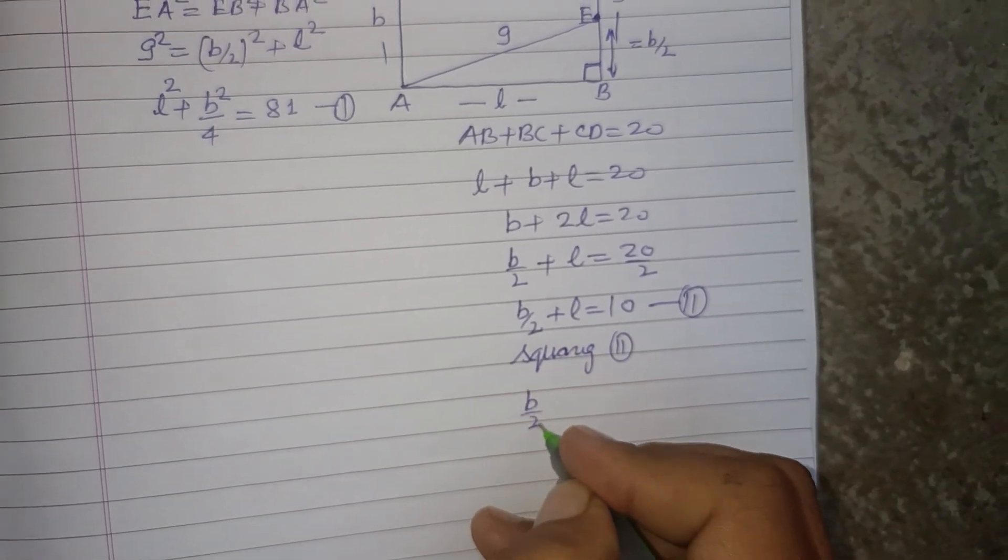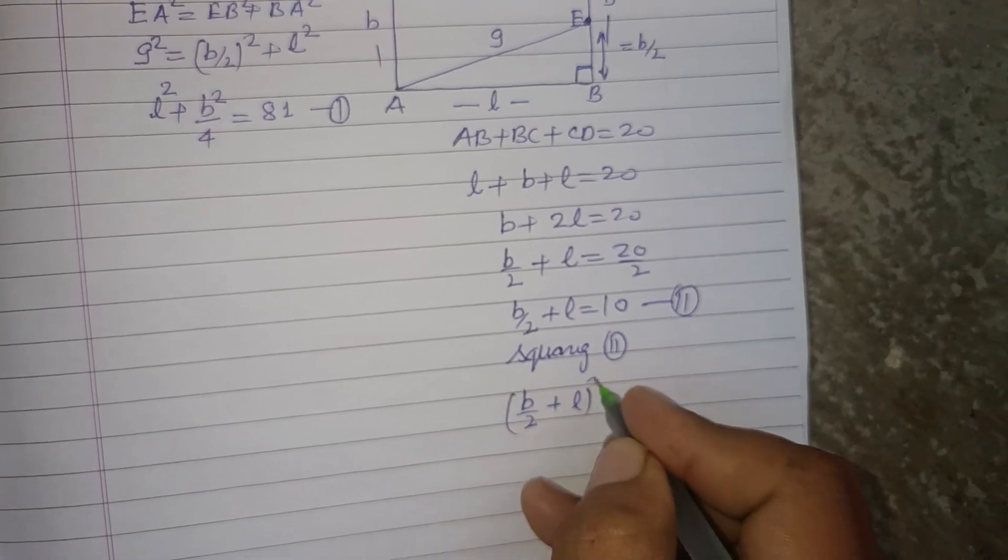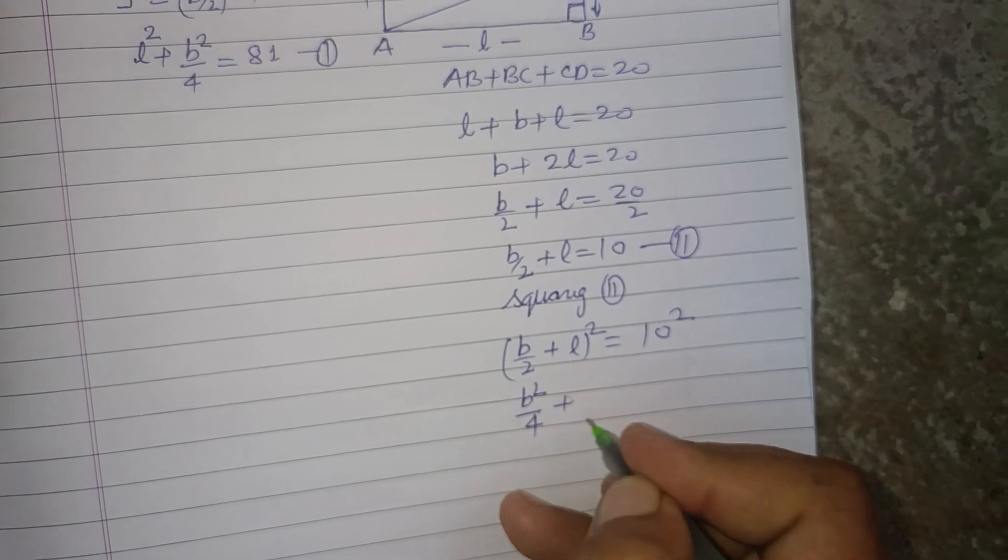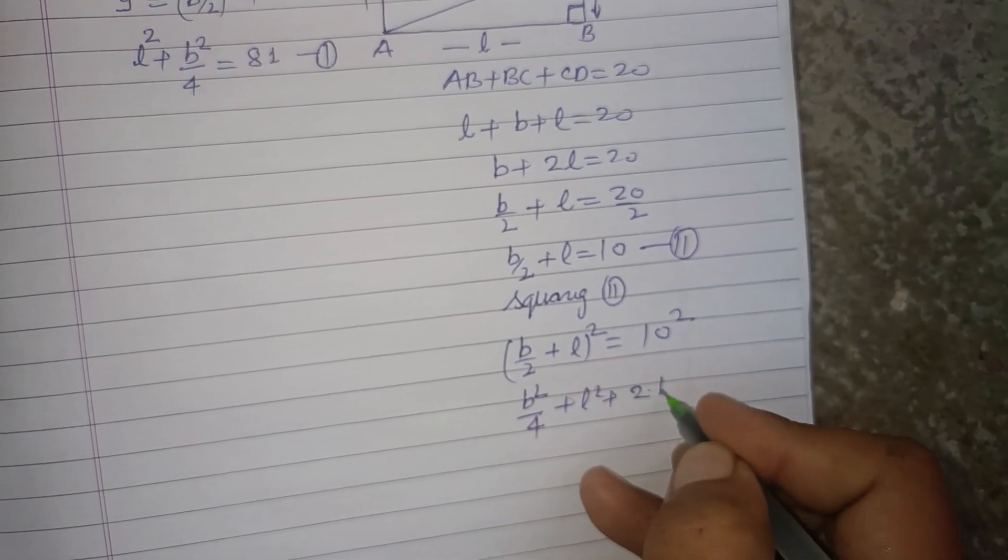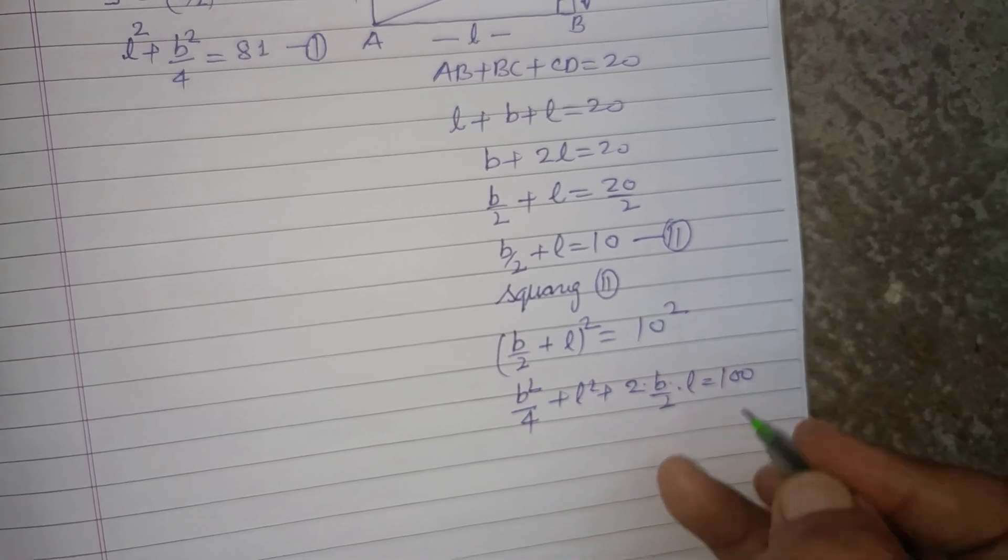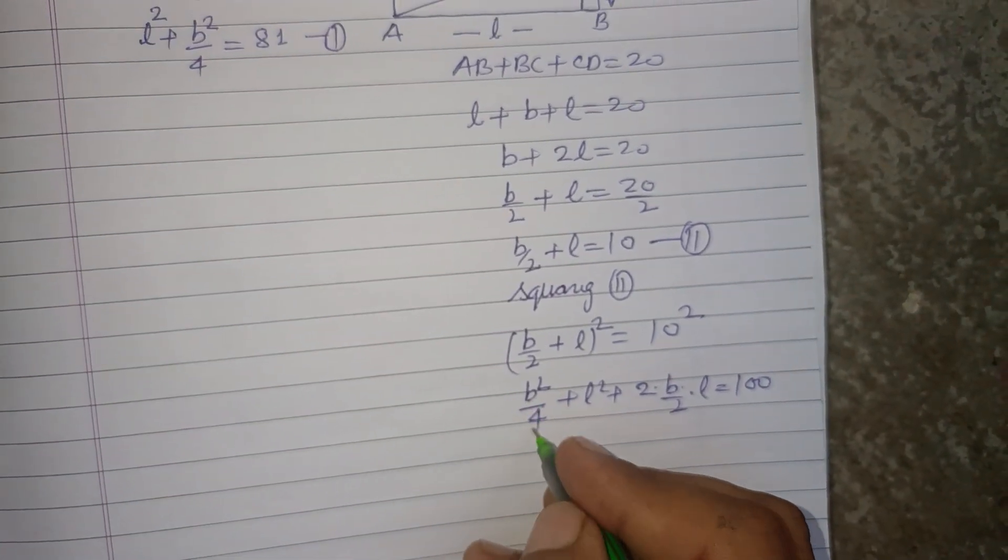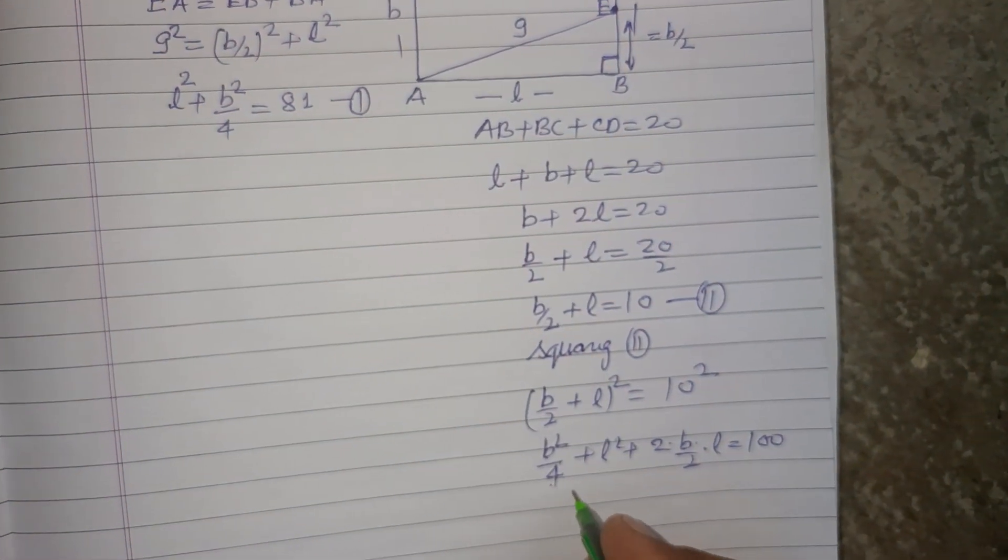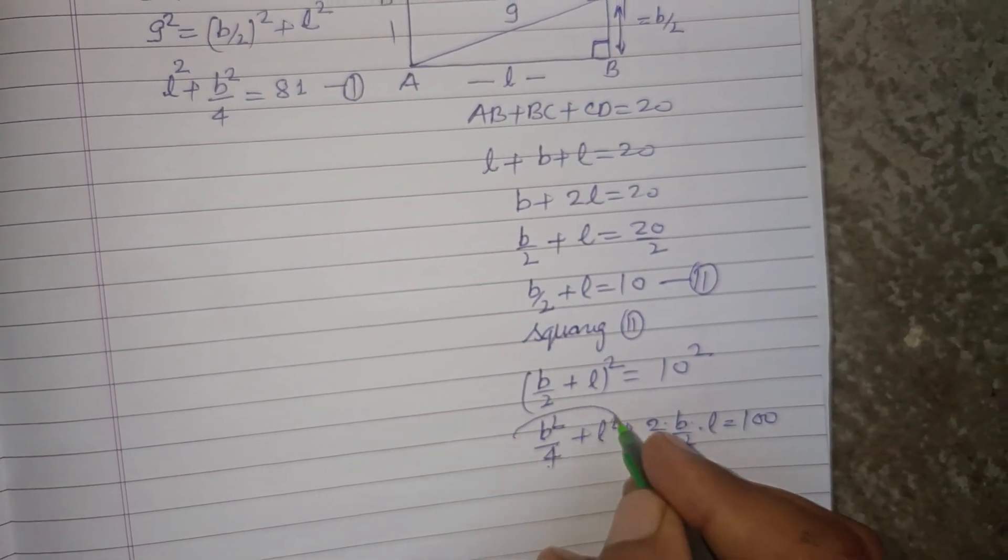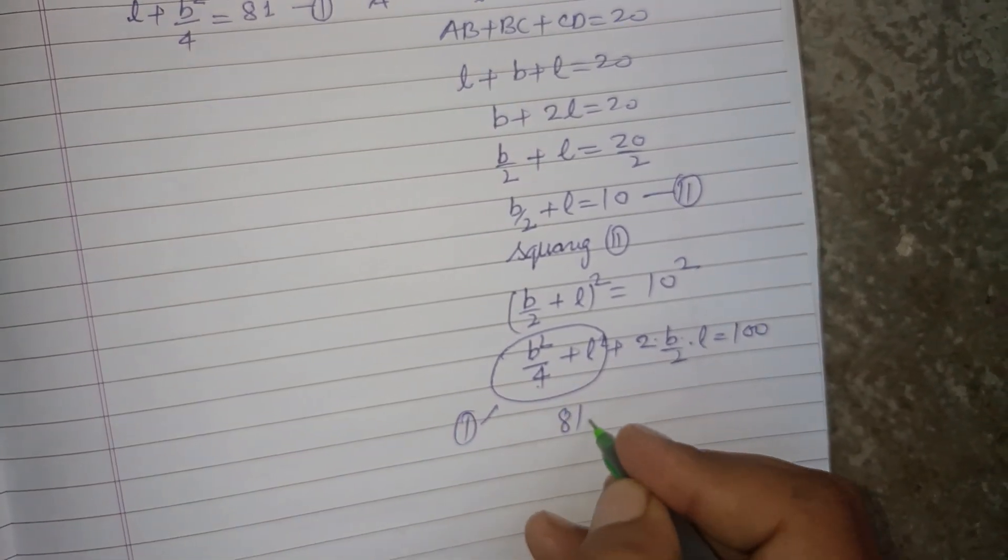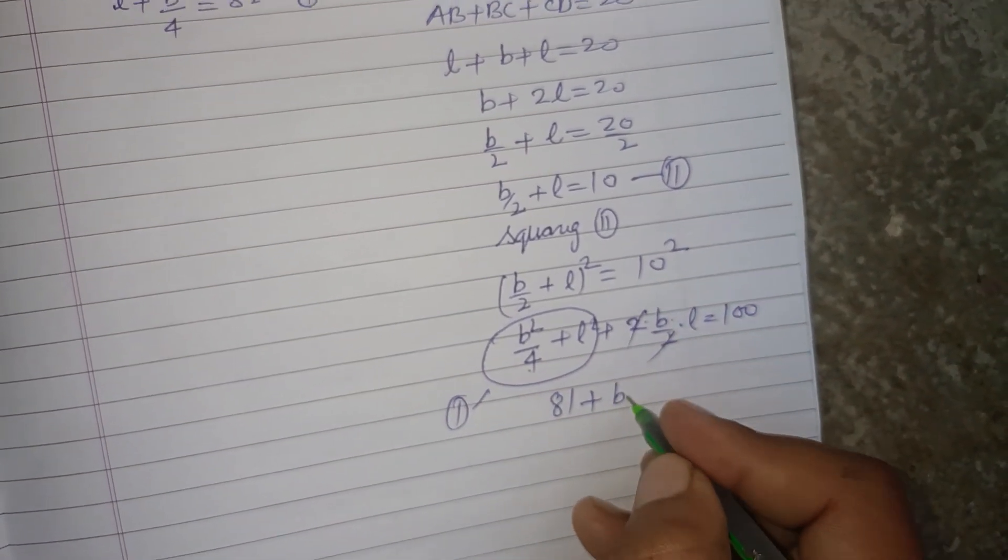(b/2+l)² = 100. So b²/4 + l² + 2(b/2)(l) = 100. Now b²/4 + l² can be obtained from the first equation, which equals 81. So 81 + bl = 100, therefore bl = 19.